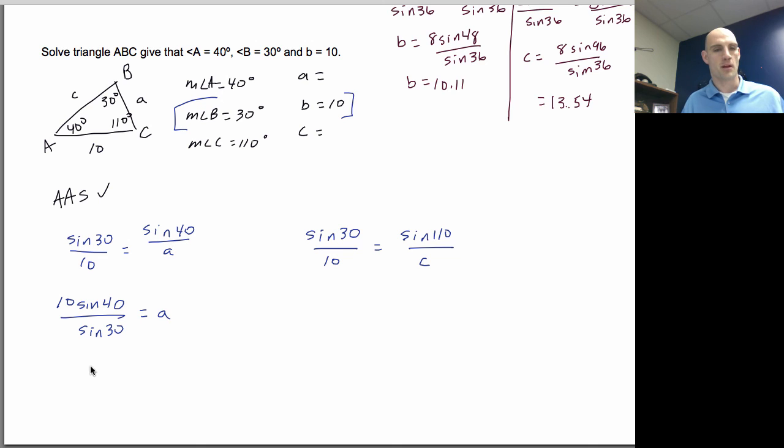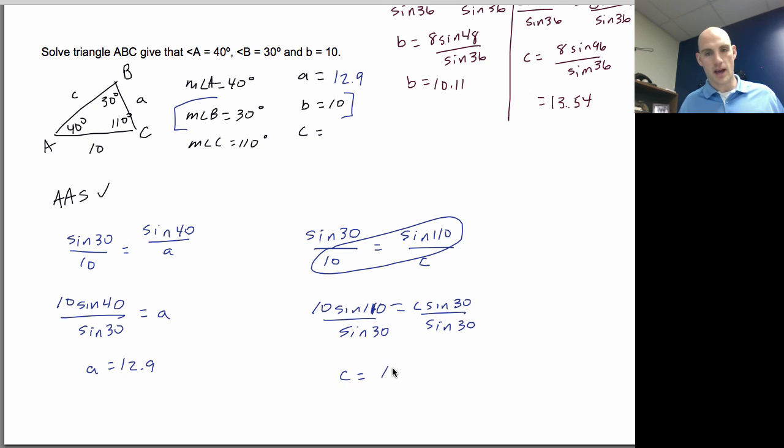So cross multiply 10 sine of 40 over sine 30 equals a, cross multiply and divide. So my a is going to be equal to 12.9. Again over here, we're going to cross multiply and divide. So I cross multiply 10 sine of 110, and that's a little shortcut, right? Because ultimately I'd have 10 sine of 110 is equal to c sine of 30. But if I cross multiply and divide by the third one, it's the same as saying this here. Just a little review. So c is equal to 18.8 in that one.